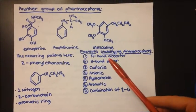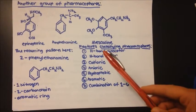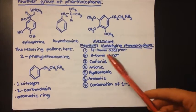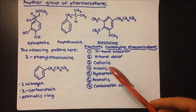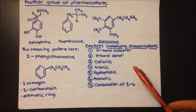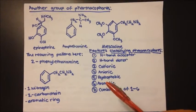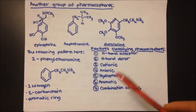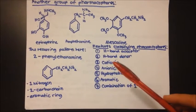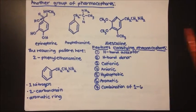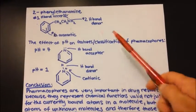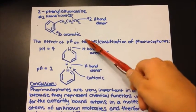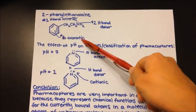Let's take a look at the whole list of features. Is it an H-bond acceptor, an H-bond donor, cationic — that is, does it have a positive charge — anionic, does it have a negative charge, hydrophobic, aromatic, or a combination of one to six of these? For example, could it be aromatic and an H-bond acceptor, or an H-bond donor and cationic? Let's go ahead and take a look at phenylethanamine and note the features we just listed.